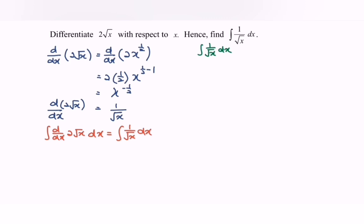Clearly, referring to the right-hand side, we notice that we have the same situation. So, simplifying, we will obtain 2 square root of x plus c.